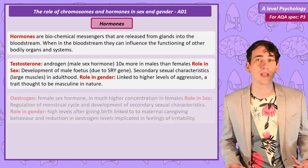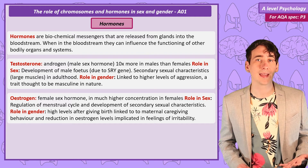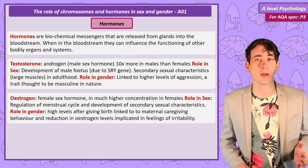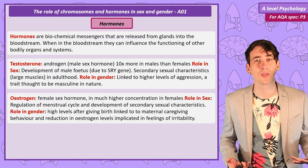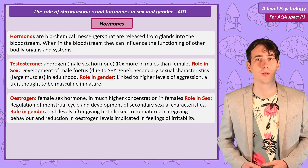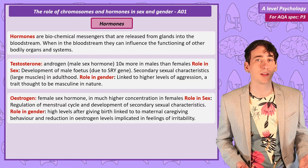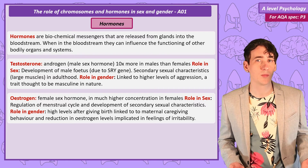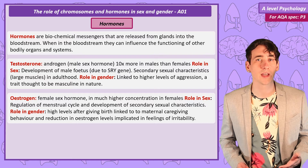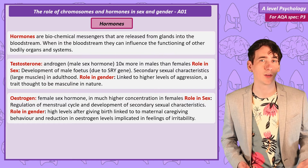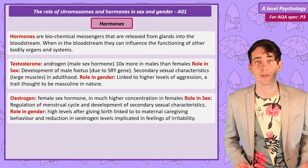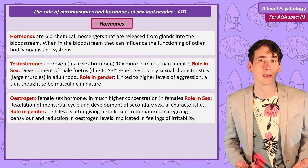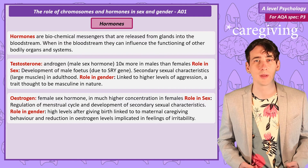Estrogen is the female sex hormone, again found in both males and females, but estrogen is found in much higher levels in females. One of estrogen's roles in sex is regulation of the menstrual cycle and the development of secondary sexual characteristics. Estrogen is thought to have a behavioural influence over feelings of irritability and levels of cooperative behaviour.